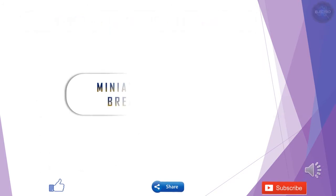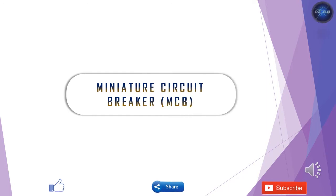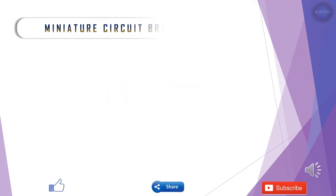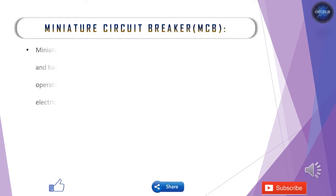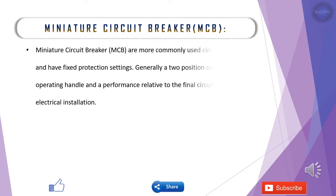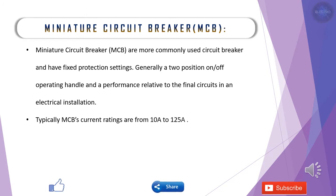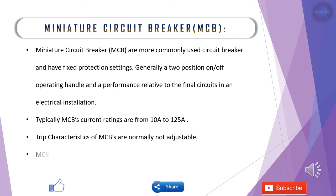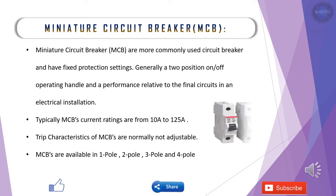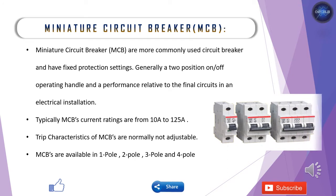Now we'll move to miniature circuit breakers — MCBs. These are the most commonly used circuit breakers in our daily life. They have a fixed protection type of settings only, generally a two-position on/off handle. MCBs are installed in our final circuits. The general ratings of MCBs range from 10 amps to 125 amps, and they are available in single pole, two pole, three pole, and four pole versions.